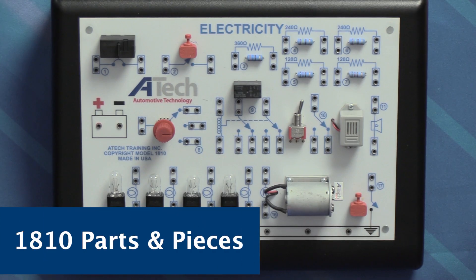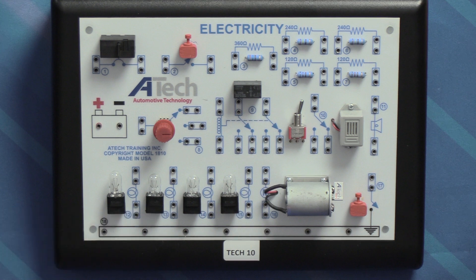Once you've selected your appropriate configuration, you're ready to start looking at the parts and pieces on the trainer board. Starting on the left in the middle, you'll notice we've got our battery with our terminals for our positive and negative side along with a resettable circuit breaker. We have a momentary switch right here, and a full battery of resistors including two 120 ohm resistors.